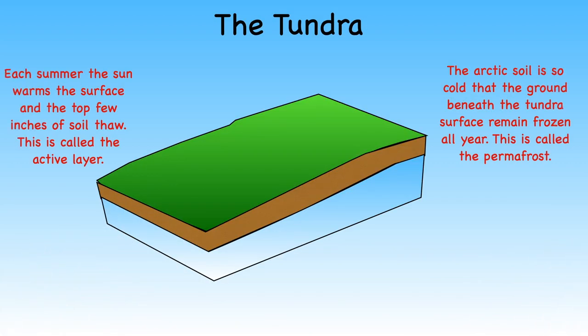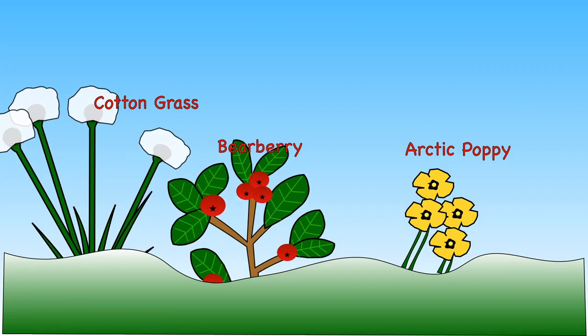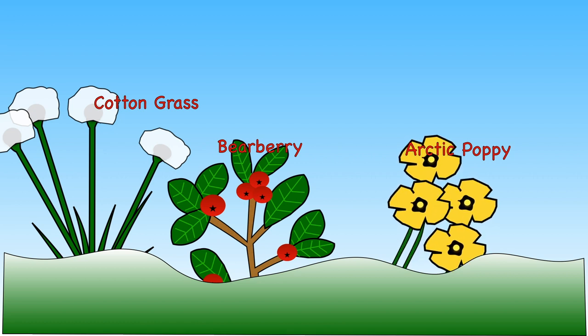A large part of the Arctic is covered in tundra. This means the ground is mostly frozen and only thaws just enough to allow short grasses, mosses and a few other plants to grow. Bearberry, Arctic poppy and cotton grass are typical plants. Trees are unable to grow here because the tree roots are unable to go as far down into the ground as they need to because the ground is frozen.